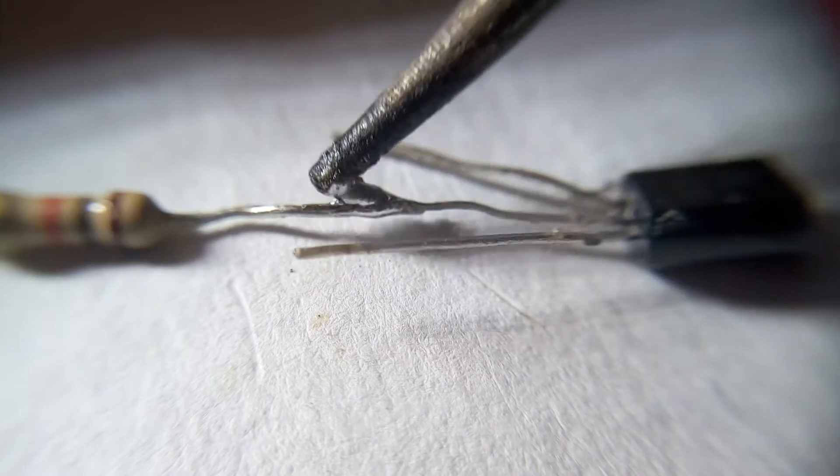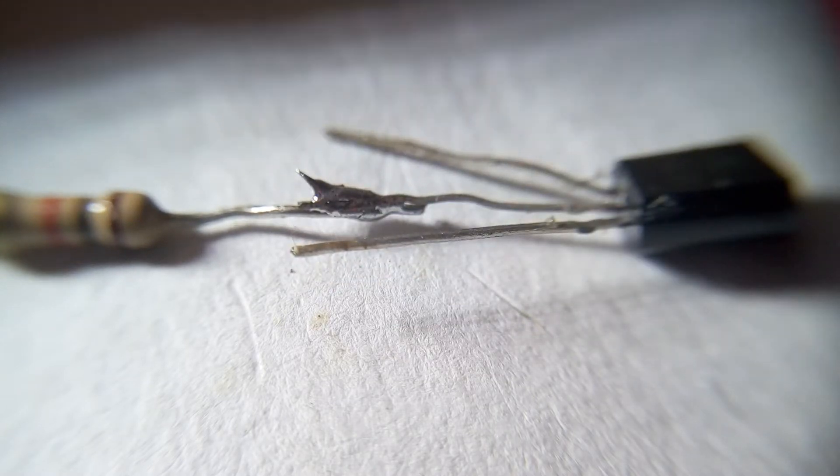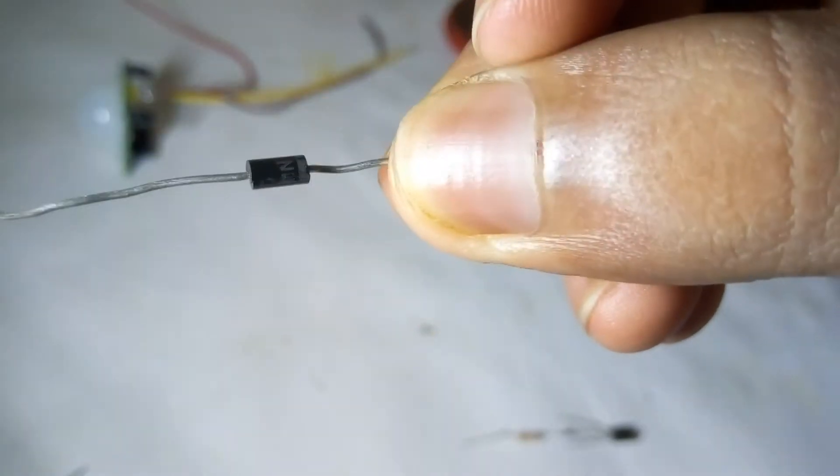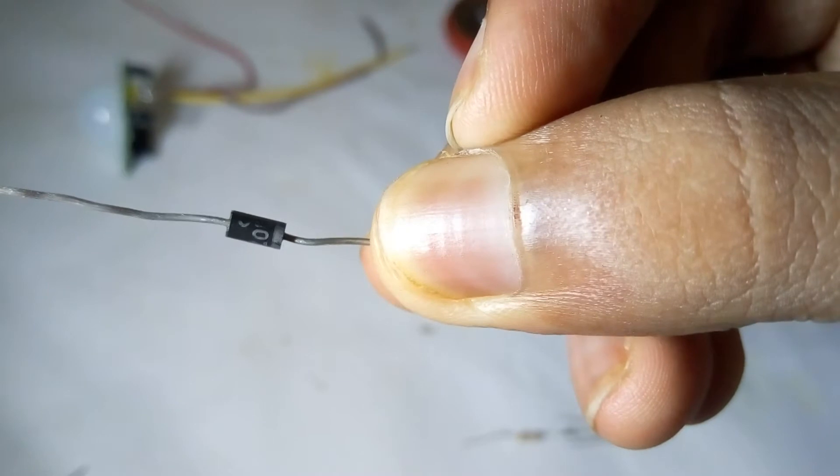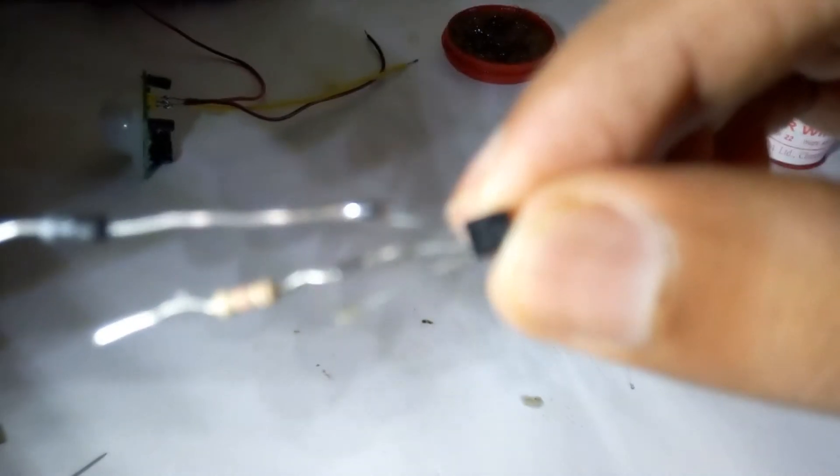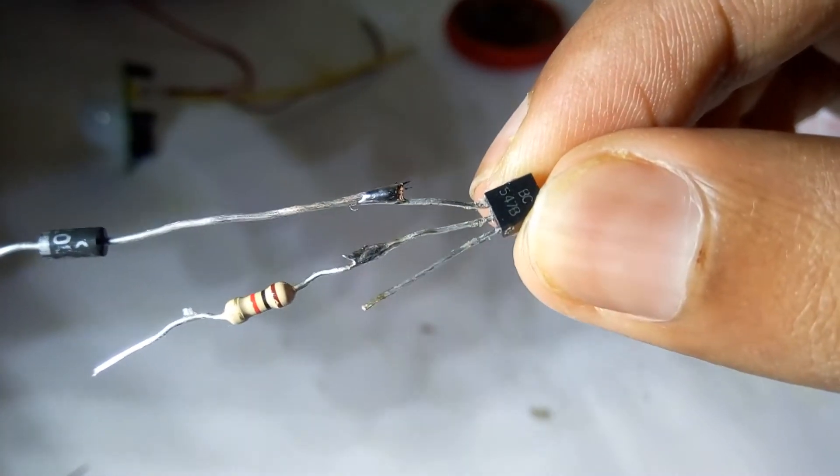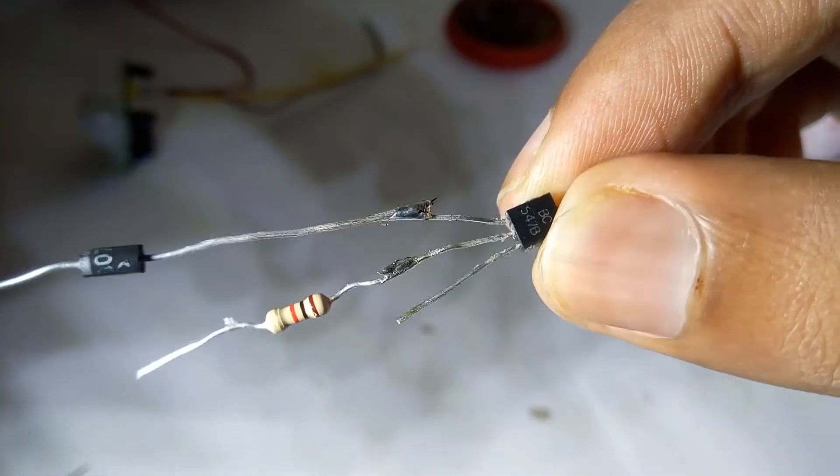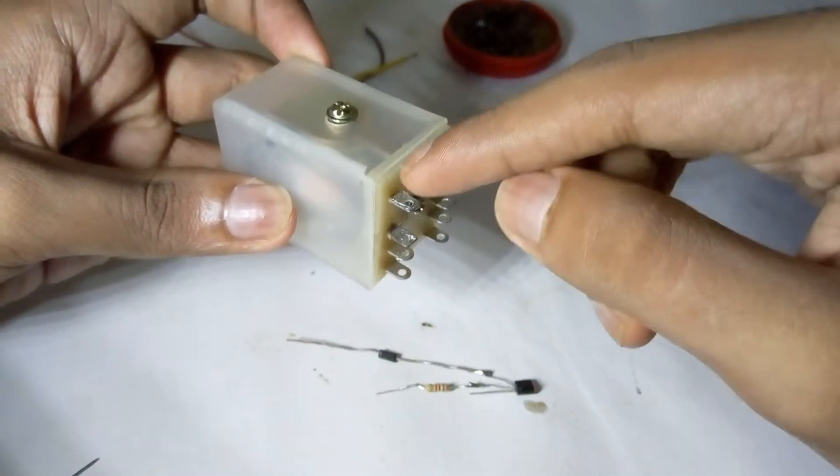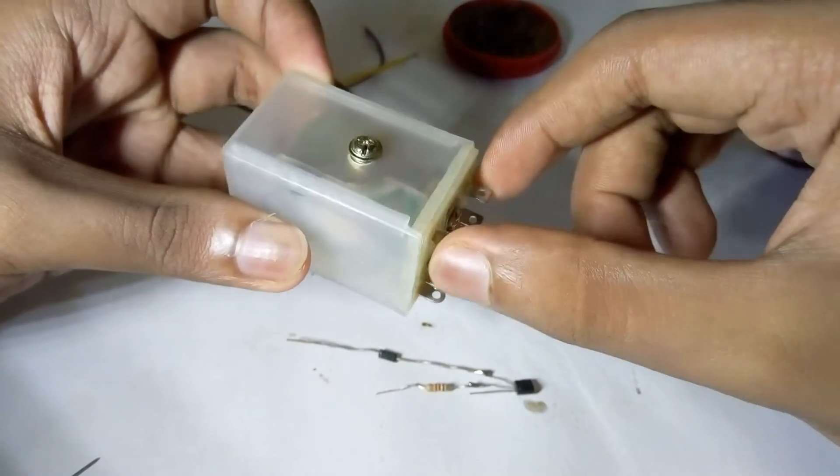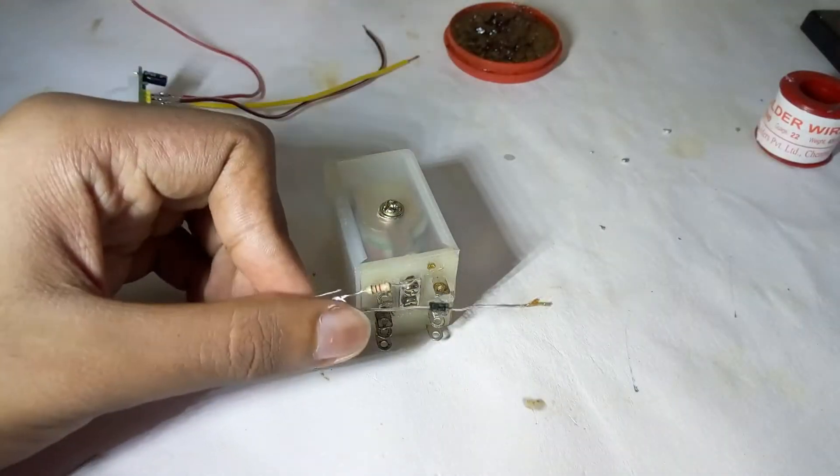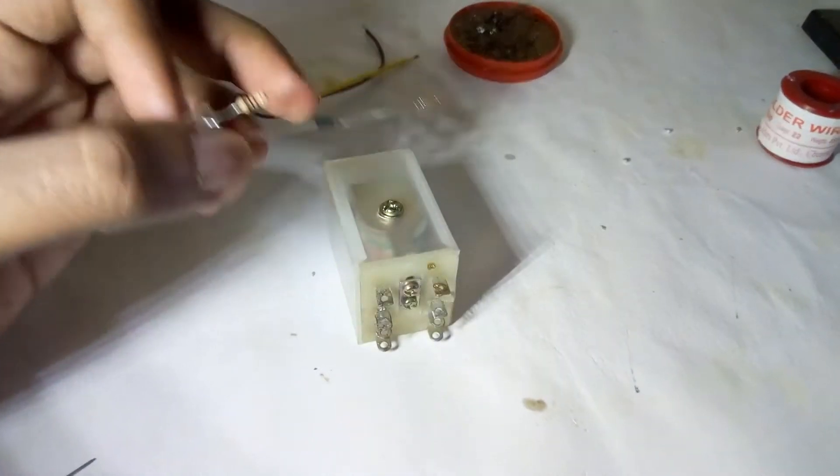This is diode 1N4007. Connect it to the leg of the transistor as shown and keep in mind the diode's ring. This is a relay and we have two legs we use for our circuit. We connect it over these legs.